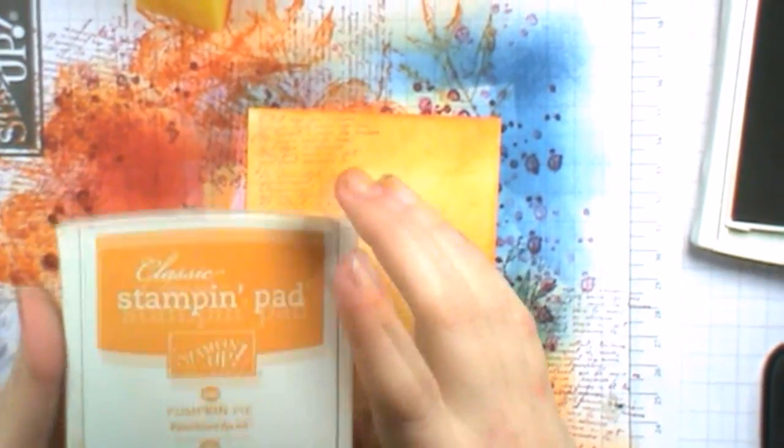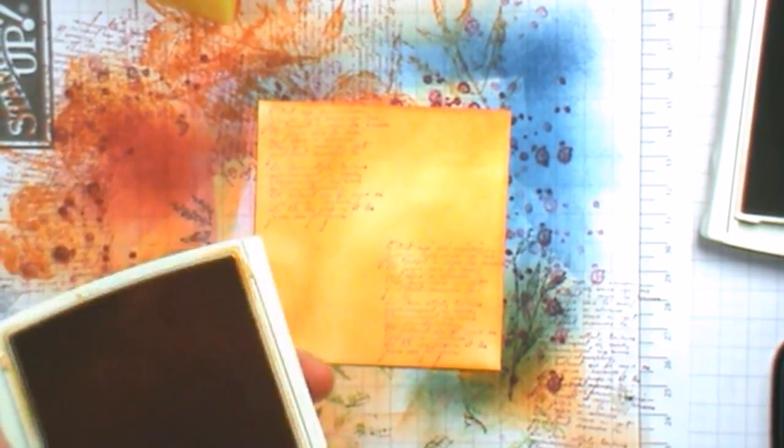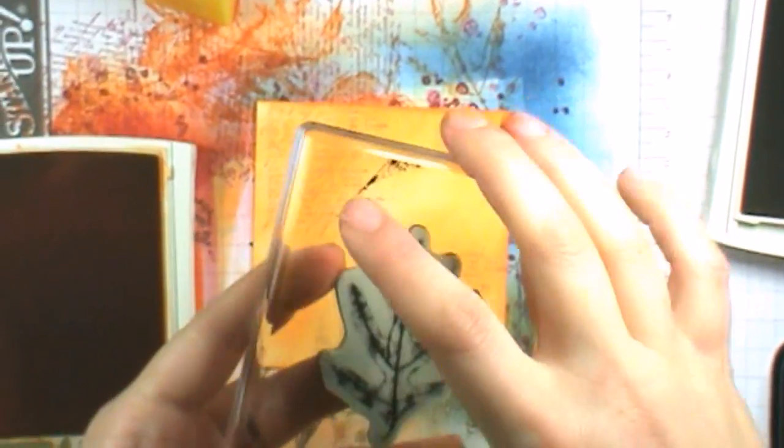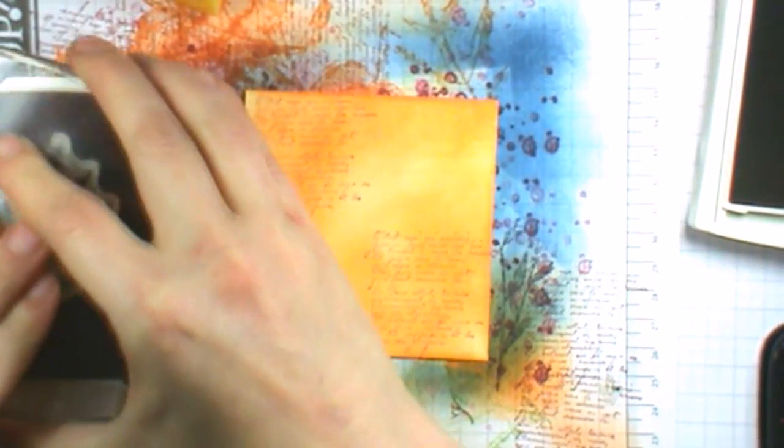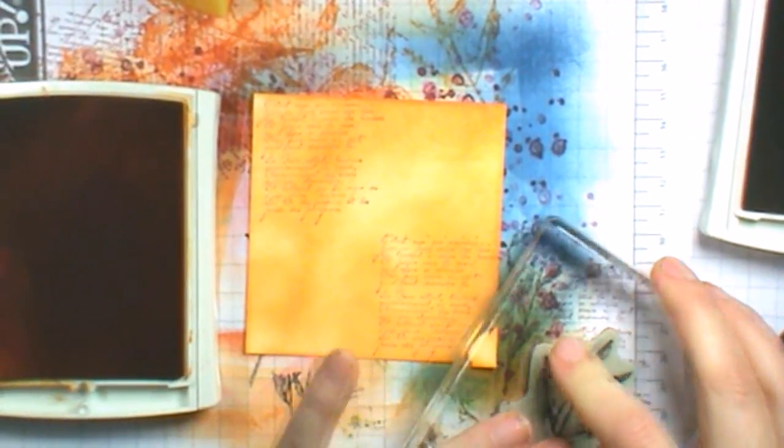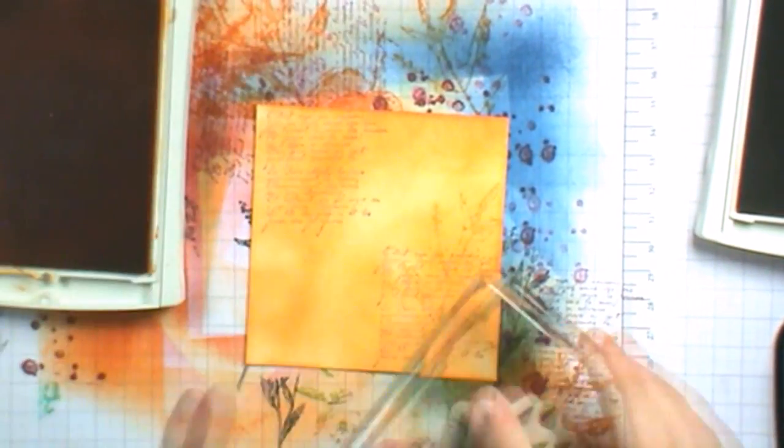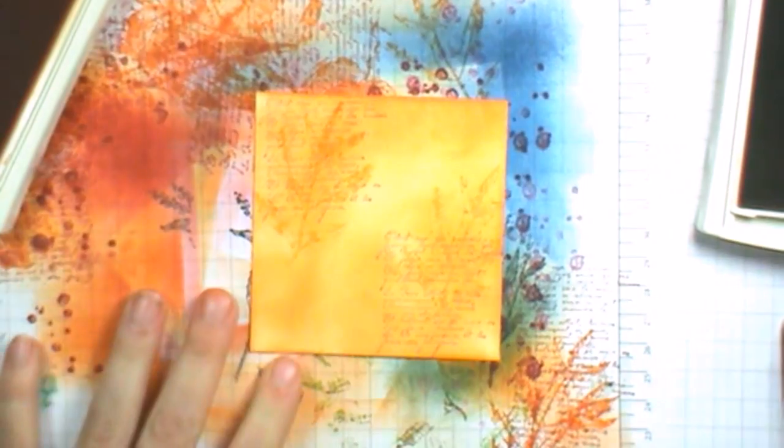We will then put the Cobbler aside and take our Pumpkin Pie and we're going to use two leaves from the foliage. We'll start off with the big one and we're going to ink that and then onto the scratch paper and onto the cardstock. Just randomly put them where you want them.